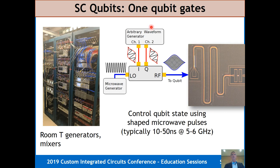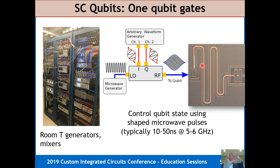How do I control superconducting qubits? You just need a microwave generator and a modulator with a Gaussian-modulated pulse. The height, length, and phase of that pulse all control where you end up on the Bloch sphere for a single qubit. You drive it with a transmission line that's capacitively coupled to the qubit. A pulse is typically 10 to 15 nanoseconds in length.